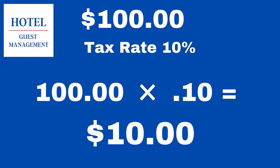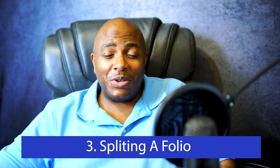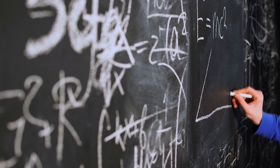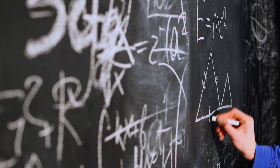The next one is splitting a folio. There were two people in the room and one person doesn't want to pay for the whole room, so you have to charge two separate cards. You take whatever the rate is — let's use $100 — and divide it by two. Do an adjustment on the first folio for $50, then do a charge on the second folio for $50. Take the second guest's credit card and charge that card the difference. If you already charged the first card for the room, refund them the $50 that you just adjusted.